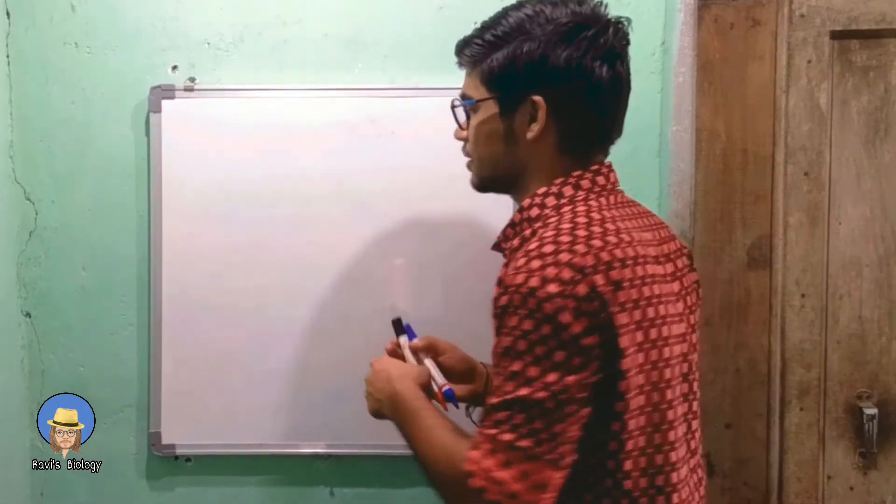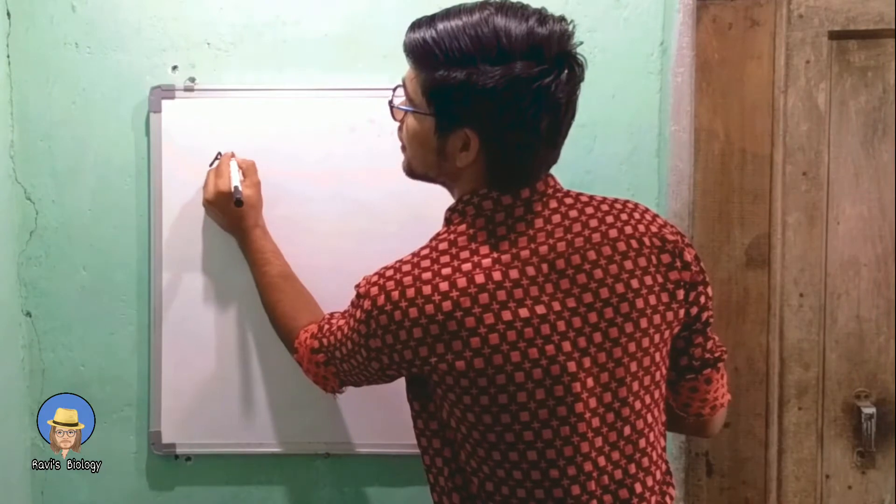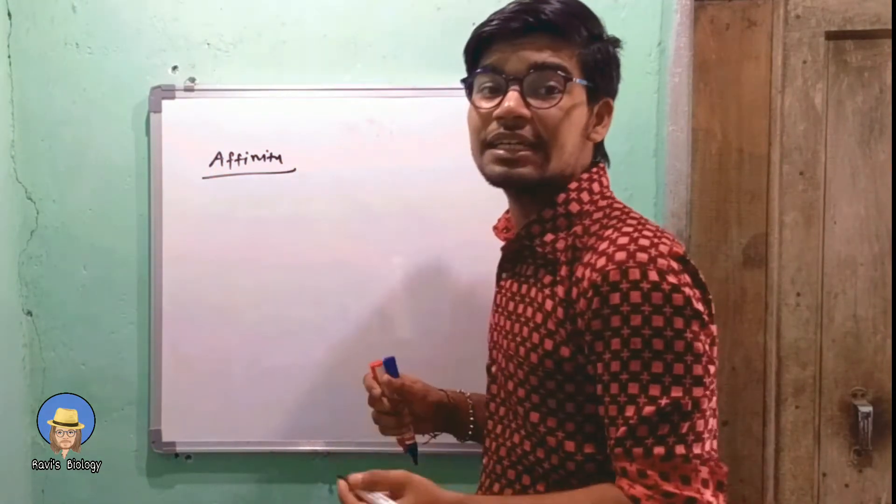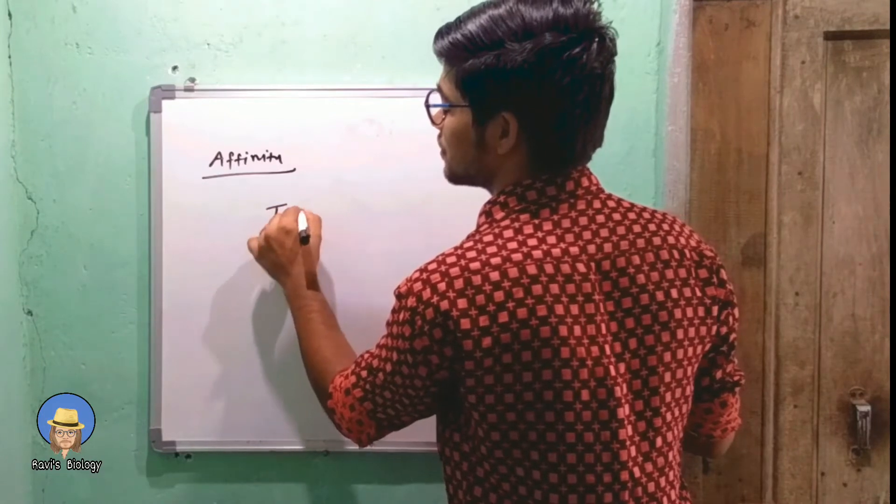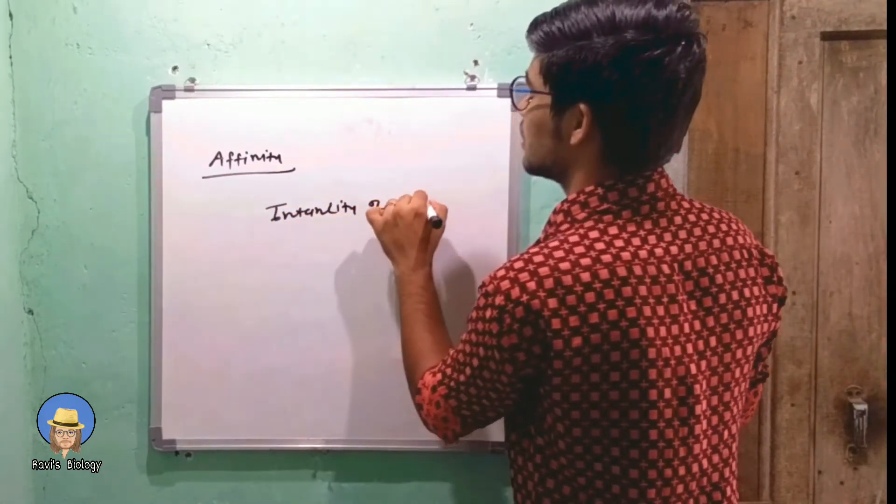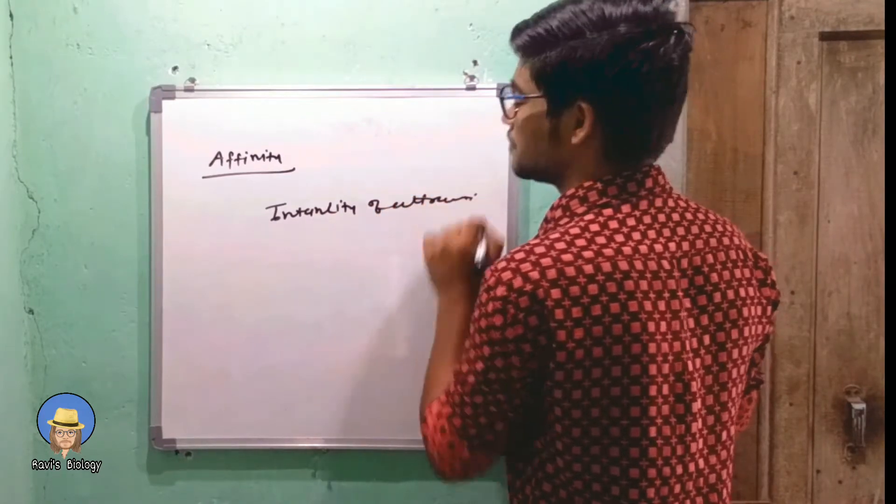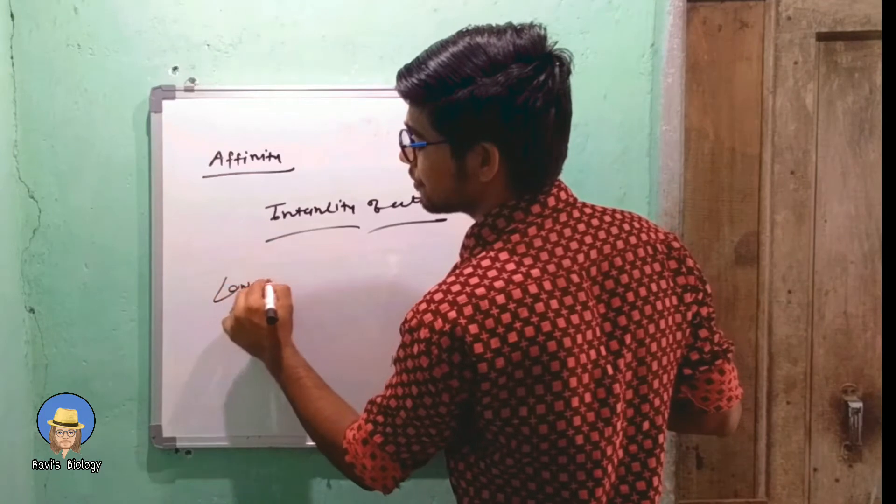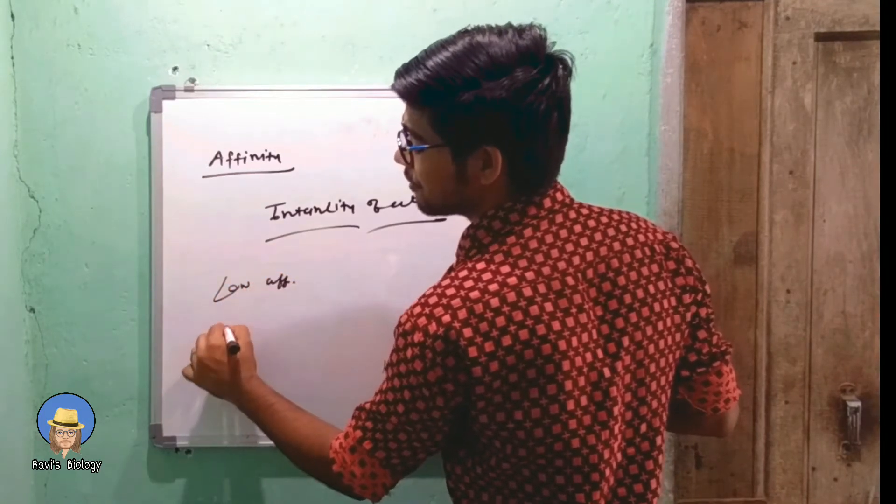The second feature is affinity. It is the intensity of attraction between antigen and antibody. It has two types: low affinity and high affinity.